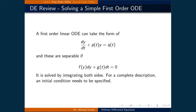Now that we've looked at some classifications of differential equations, let's look at solving a first-order linear ordinary differential equation. These typically take the form dy/dt + p(t)·y = q(t), where p(t) and q(t) are just polynomial functions — terms with T, T squared, T cubed — linear-type terms.